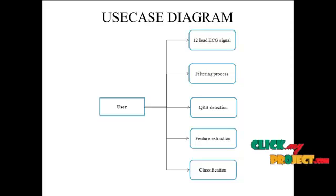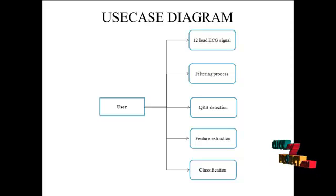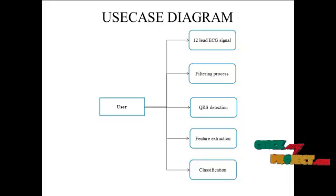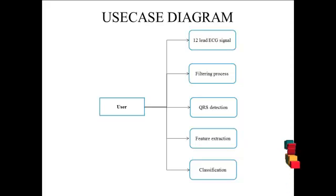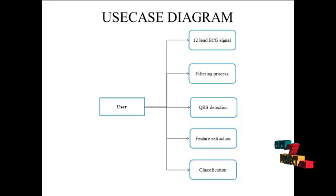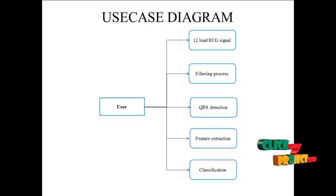Next, we remove the noise from that signal using Gaussian noise removal. Then we detect the wave from the input signal using QRS detection, which finds the wave and heartbeat rate for the given input signal. Next, we extract features from the measured waves and also find the atrial wave detection to find the wave and RR interval.